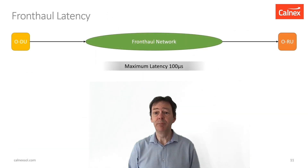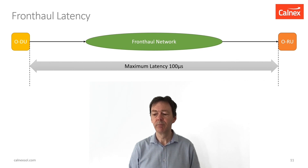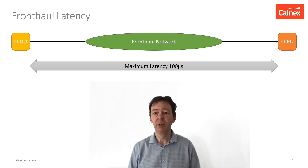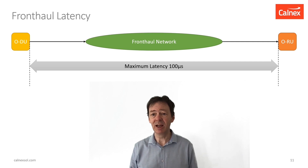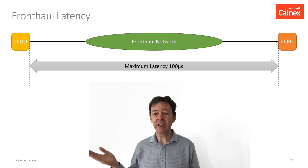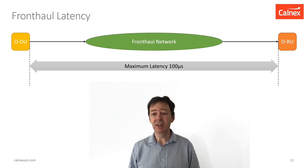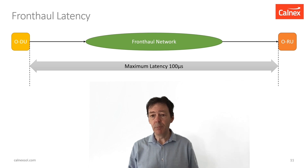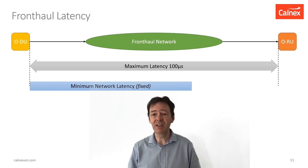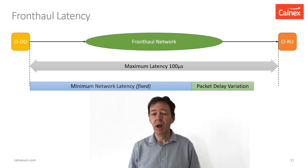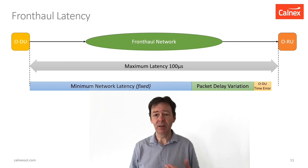Let's explore the latency management requirements a little bit closer. Between the DU and the RU, there's a maximum latency of 100 microseconds, and it's the DU's responsibility for managing that latency. The DU schedules the time of playout of traffic on the RU. So in order to do that, it needs to know the delay from DU to RU. That delay will be made up of the minimum network latency — the fastest a packet can physically get through the network — the packet delay variation, and it also has to take into account any time error in the DU and the RU.